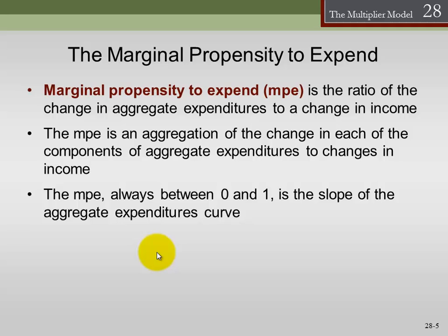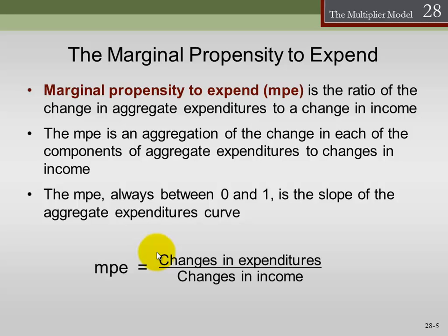If we have a marginal propensity to expend of 0, that means we'll save all of our income and spend none of it — but that's the lowest we can go. If it's 1, we will spend all of our additional income and save none of it. So we have this natural bound between 0 and 1 for the marginal propensity to expend. Formulaically, the marginal propensity to expend is simply the ratio of the change in expenditures divided by the change in income.